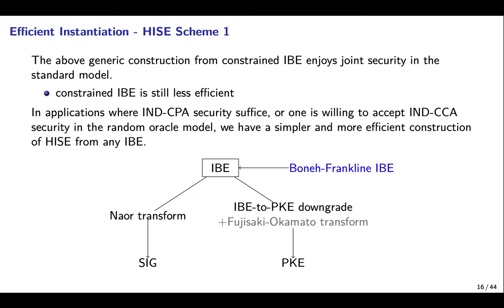The generic construction from constrained IBE enjoys strong joint security in the standard model. However, so far there is no efficient construction of constrained IBE. In applications where IND-CPA security suffices, or if one is willing to accept the random oracle model, we have a much simpler and more efficient construction of HISE from any IBE. As to instantiation, we can choose the Boneh-Franklin identity-based encryption as the starting point.